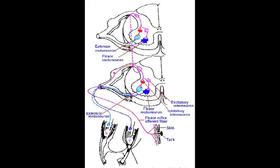As you can see in this diagram, this reflex is a polysynaptic reflex. There is a synapse between our afferent nociceptive fibre and the interneuron, and then another synapse between the interneuron and our alpha motor neuron, which then travels to our flexor muscle and causes contraction and withdrawal of our limb.